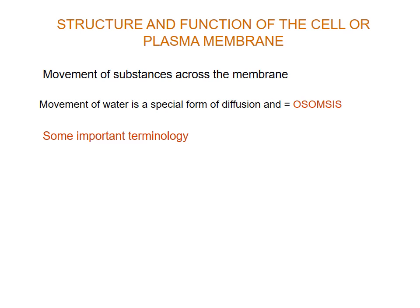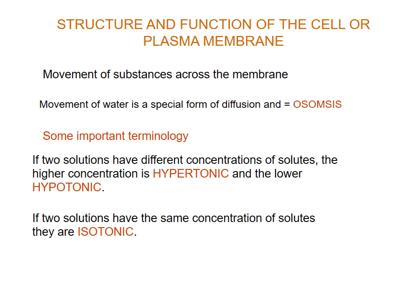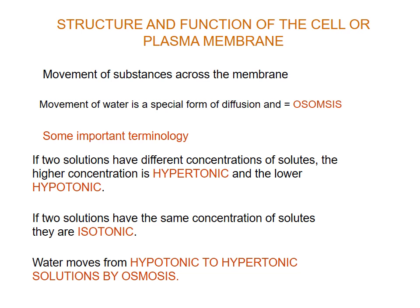Here are some important terms you need to know. If two solutions have different concentrations of solutes, the higher concentration is known as hypertonic and the lower concentration is known as hypotonic — hyper means very high, hypo means very low. If two solutions have the same concentration of solutes, they are said to be isotonic — iso means the same. In essence, water moves from hypotonic to hypertonic solutions by osmosis.